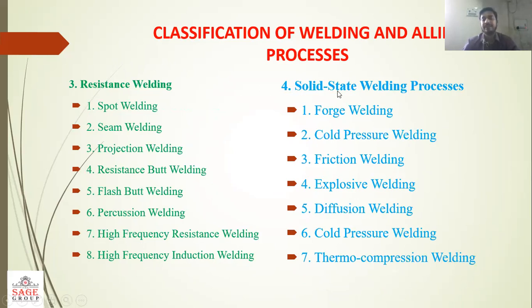Next is solid-state welding process. In solid-state welding the types include: forge welding, cold pressure welding, friction welding, explosive welding, diffusion welding, and thermocompression welding.